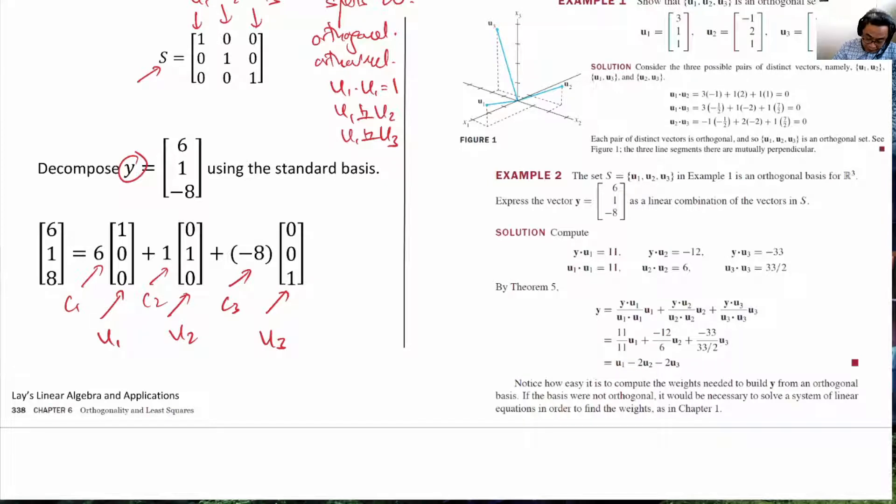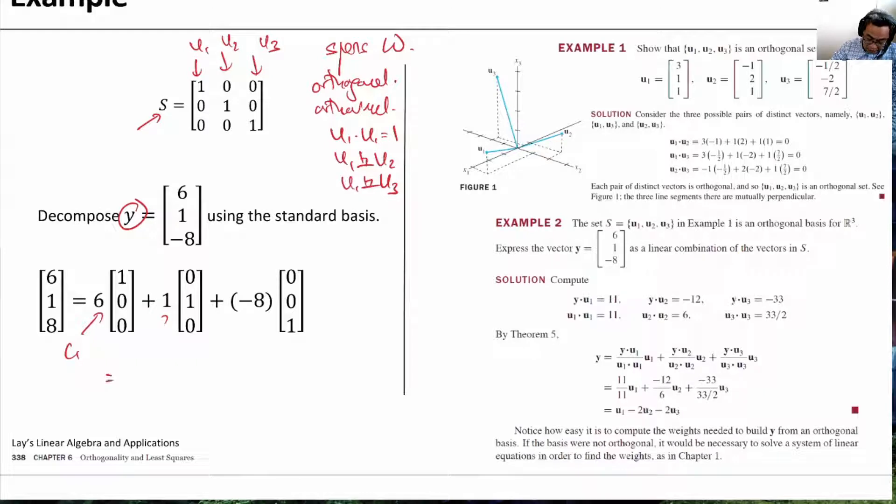Let us see whether this is what we get. C1 is equal to Y dotting with U1, divided by U1 dotting with U1. What do we get on the top? Since this is the identity matrix, the vectors U1, U2, U3 are actually E1, E2, E3. Y dot U1 is exactly 6. U1 dot U1, because this is an orthonormal basis, is 1. So C1 equals 6.